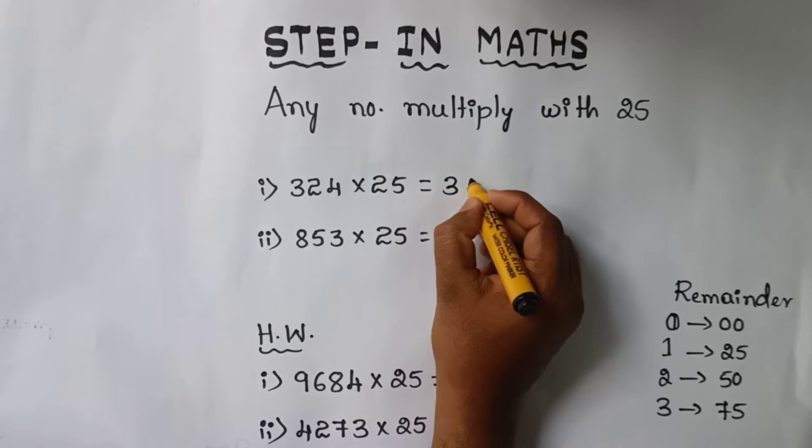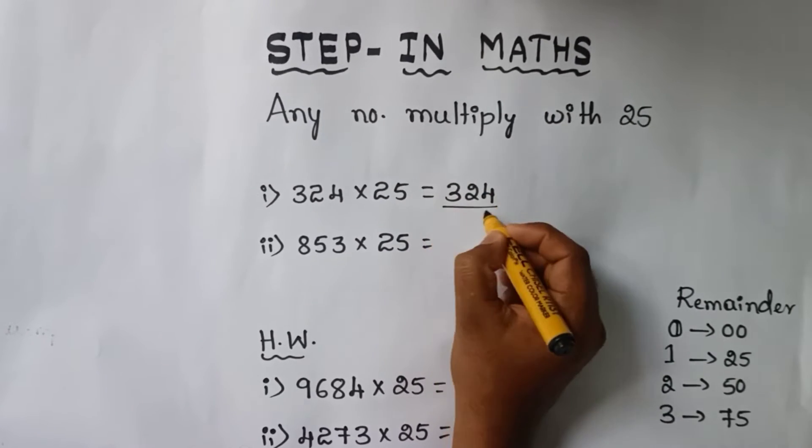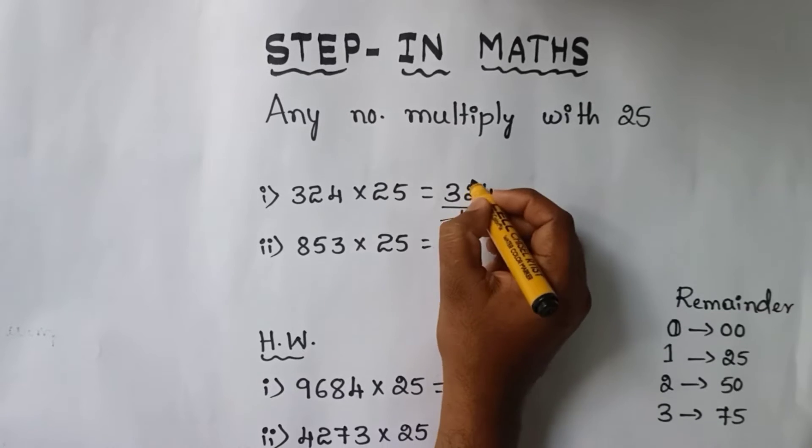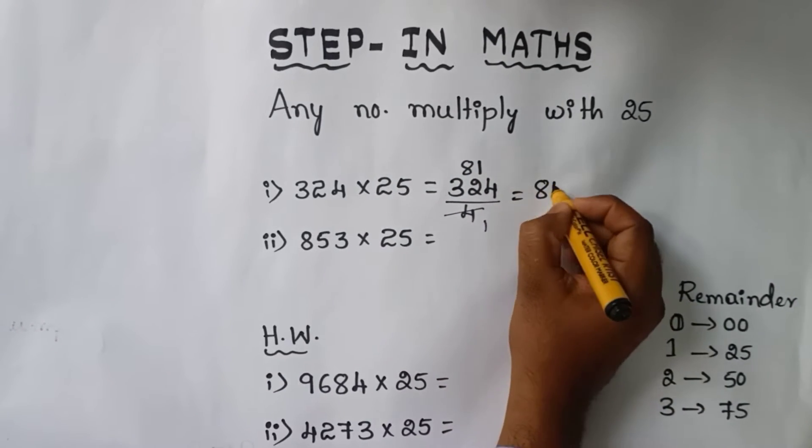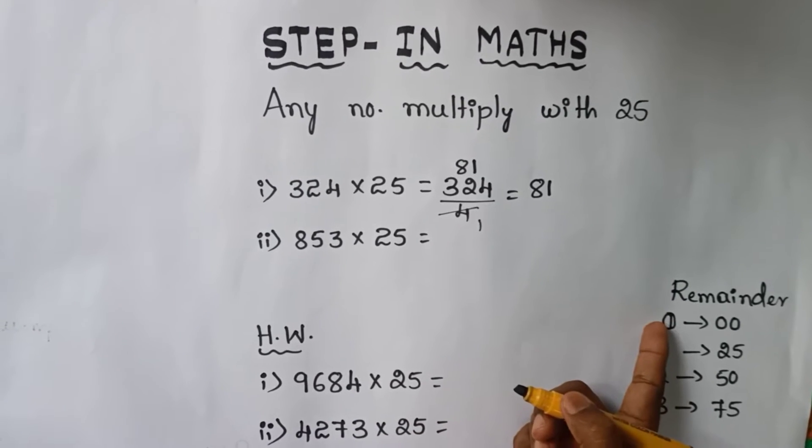First example: 324 divided by 4. 4 ones are 4, 4 eights are 32, 4 ones are 4. Here we got 81 and here we got the remainder is equal to 0.